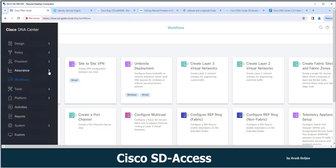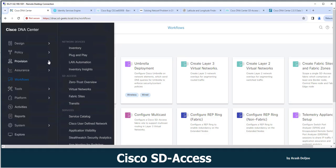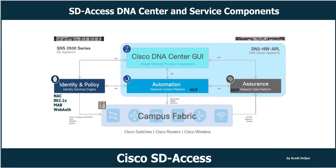Here we have Assurance — this is Cisco DNA Center Assurance — and also the Provision menu for provisioning our network. Now we understand that for provisioning we use NCP, and for assurance we use NDP. We now understand the Cisco DNA Center appliance components — NDP, NCP, and the management layer — and the communication between them, along with the function of ISE. This has been a good high-level view for understanding these components, and we will learn more detail in future videos.